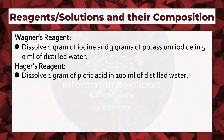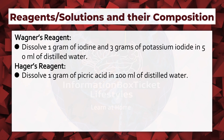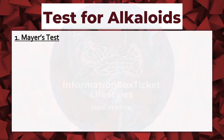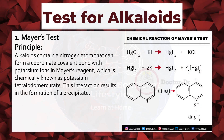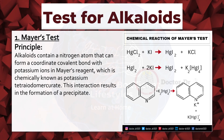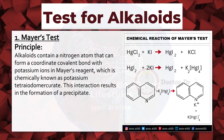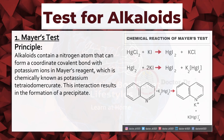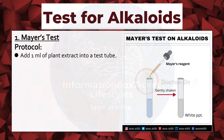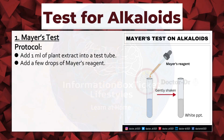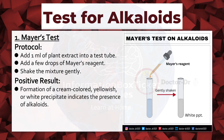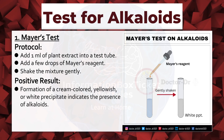Test for Alkaloids. Mayer's Test: add Mayer's reagent to the plant extract and shake the mixture gently. Positive result: formation of a cream-colored, yellowish, or white precipitate indicates the presence of alkaloids.